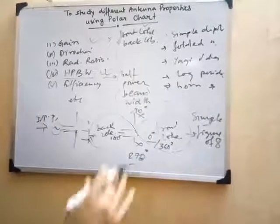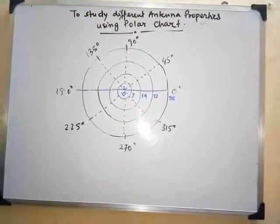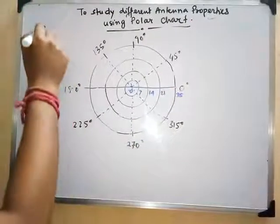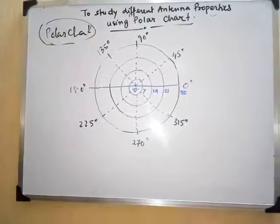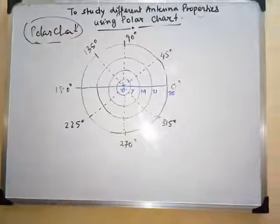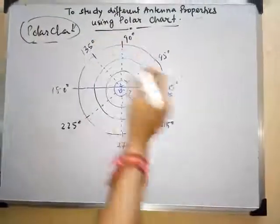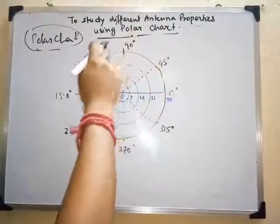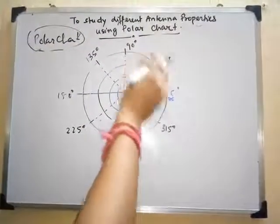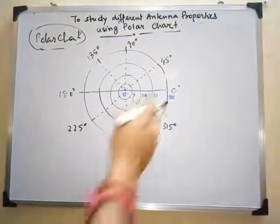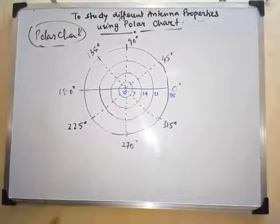Now let us see how to plot different antenna characteristics using the polar chart. Here I have drawn a simple representative figure of the polar chart. I have taken angular intervals of 45 degrees for clarity — using 5 or 10 degree intervals would make the figure cluttered. This polar chart is what we use to plot different antenna properties.